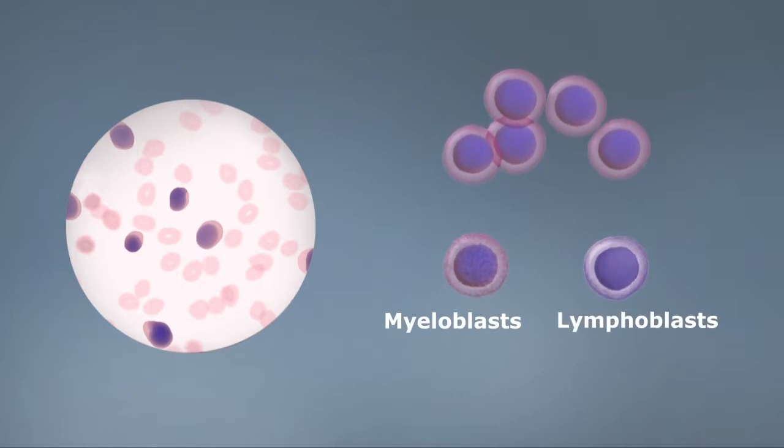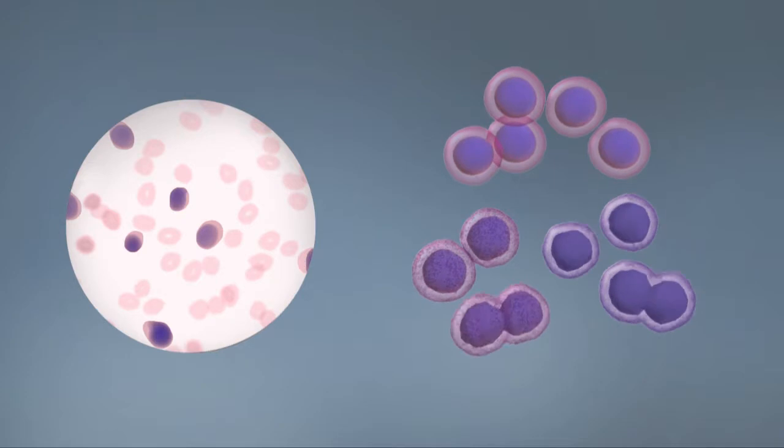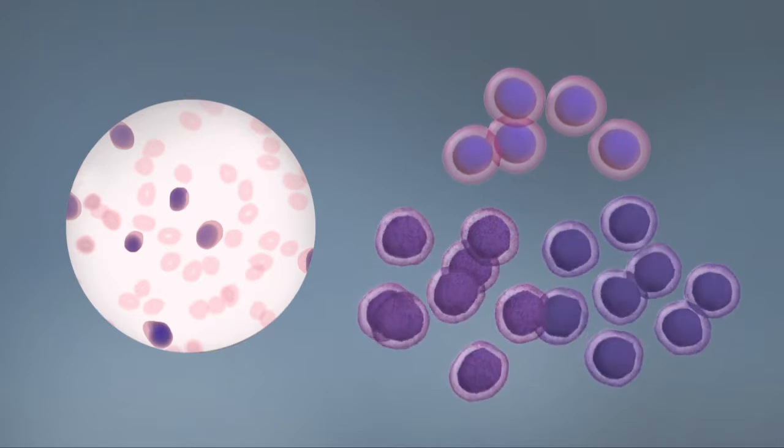Instead of further developing into functioning white blood cells, these immature myeloblasts and lymphoblasts continue dividing and build up in the blood, causing acute leukemia.